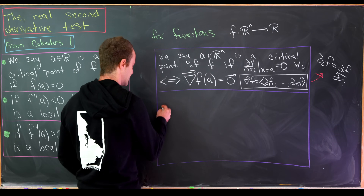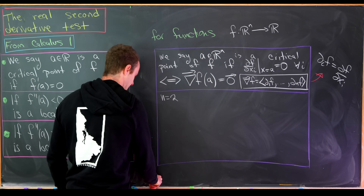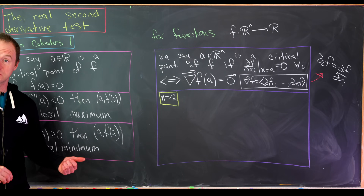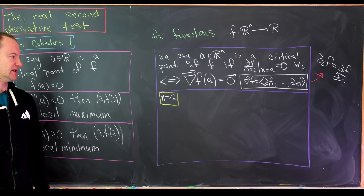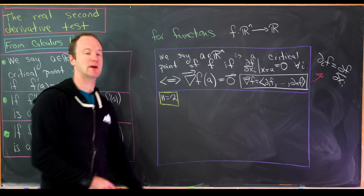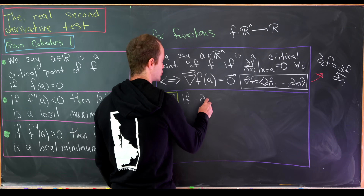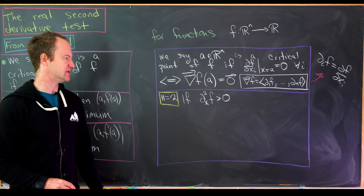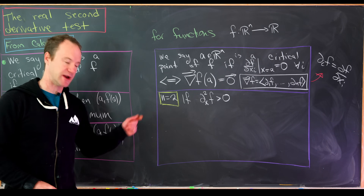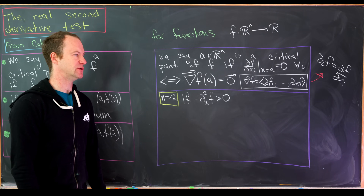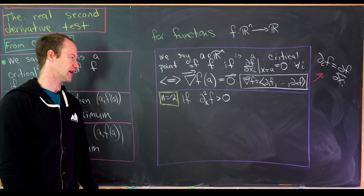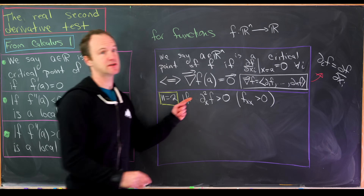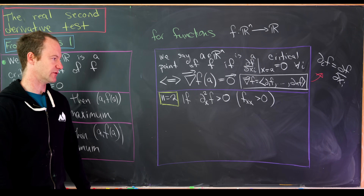Now, setting n equal to 2, let's explore what's generally given as the second derivative test in a Calculus 3 or multivariable calculus class in the US. It goes something like this: if the second partial of f with respect to x — denoted ∂_x^2 f, or f_{xx} — is bigger than zero, we proceed to two cases. Those subscripts correspond to taking the partial derivative with respect to x twice.